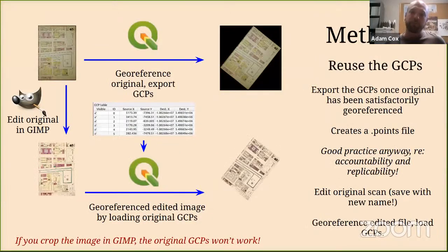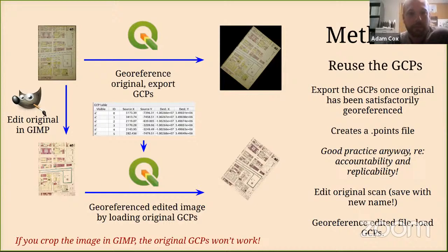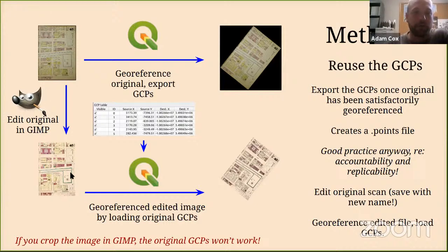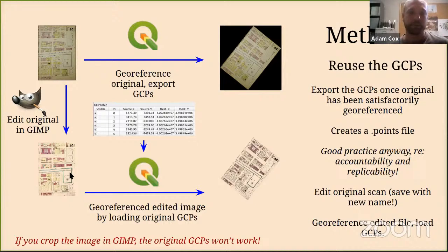Here are two methods to work around this. Method one: reuse the GCPs. The idea is that after georeferencing, you export those control points from the georeferencing panel to a .points file. Then you go do whatever you want with the original image — modify it in GIMP — then load it back into the georeferencing panel, load those saved points back in, and re-georeference. Important: if you crop the image and change its dimensions, the control points won't work anymore, because they're looking for source coordinates that no longer represent the same features.